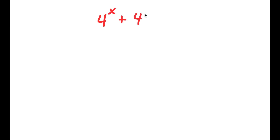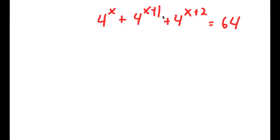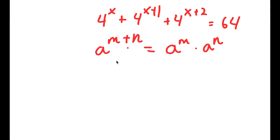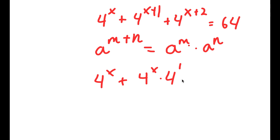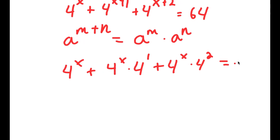In this problem, I have 4 to the power of x plus 4 to the power of x plus 1 plus 4 to the power of x plus 2 is equal to 64. To solve this, I'll use the exponent property that a to the power of m plus n equals a to the power of m times a to the power of n. So 4 to the power of x plus 1 equals 4 to the power of x times 4 to the power of 1, and 4 to the power of x plus 2 equals 4 to the power of x times 4 to the power of 2. This is all equal to 64.